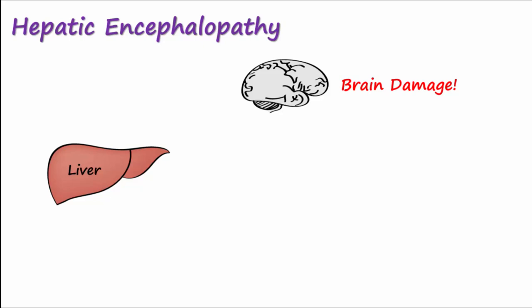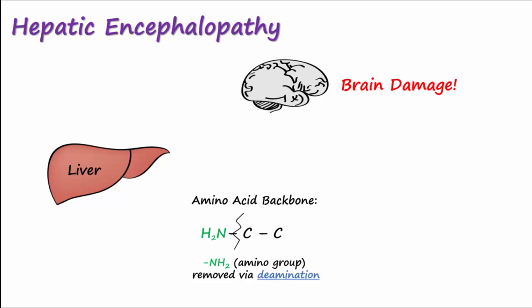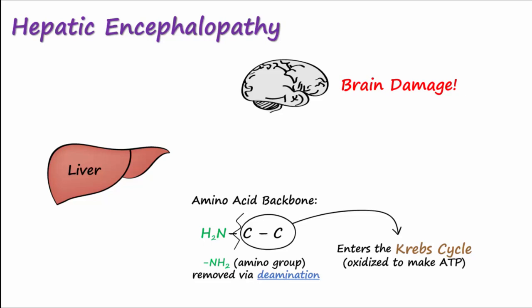A healthy liver is an important organ for the breakdown of amino acids. Amino acids have a nitrogen-carbon-carbon backbone. The nitrogen group, or amino group, can be removed from the amino acid in a process known as deamination, which primarily occurs in the liver. Deamination yields a leftover 2-carbon molecule that can either be recycled or broken down further by entering the Krebs cycle and oxidized to make ATP. The removed amino group becomes ammonia, or NH3, and is toxic to the body. So enzymes in the liver add a carbon dioxide molecule onto the ammonia to form the much less toxic urea in a process known as the urea cycle. Urea can then be excreted out of the body by the kidneys.